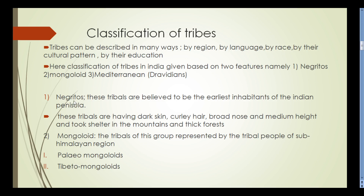The first group is Negroids. These tribals are believed to be the earliest inhabitants of the Indian Peninsula. They have dark skin, curly hair, broad nose, and medium height, and they took shelter in the mountains and thick forests.